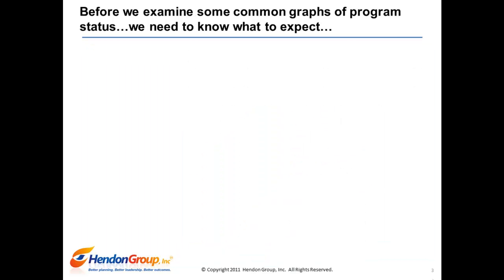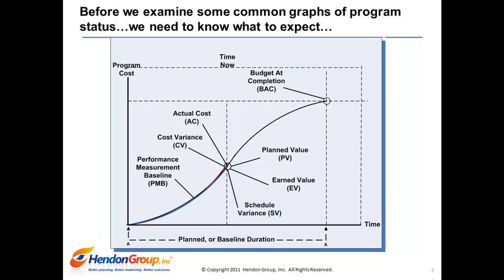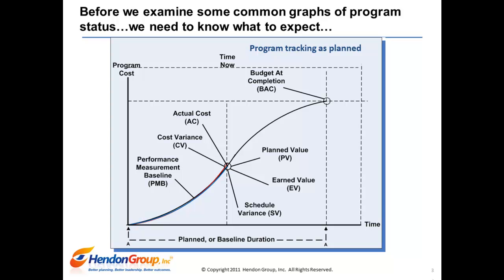Before we examine some typical program scenarios or EVM patterns, we need to know what to expect. Assuming the program team estimated 100% of the work to be performed and the estimates are reasonable, the performance measurement baseline should accurately model the duration and expected costs throughout the entire planned work effort. We should expect the earned value curve and the actual cost curve to track and sit directly on top of the performance measurement baseline, or the planned value curve.